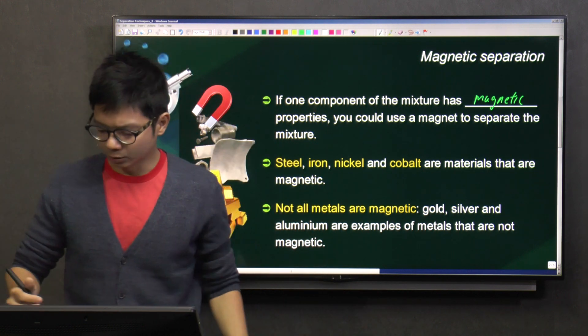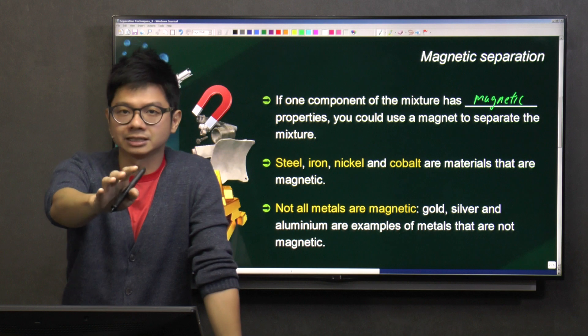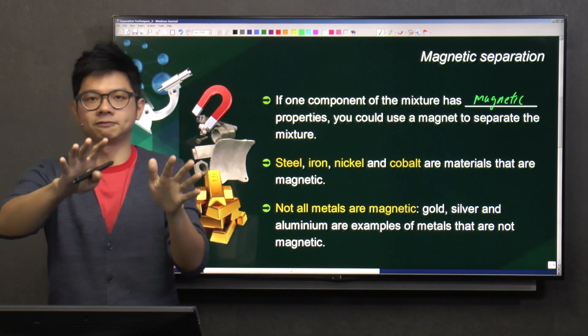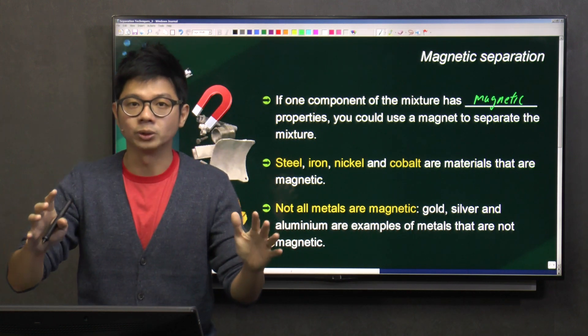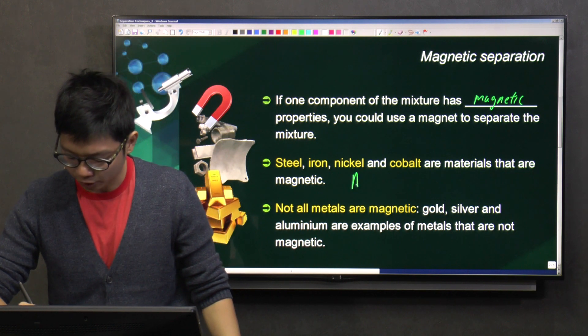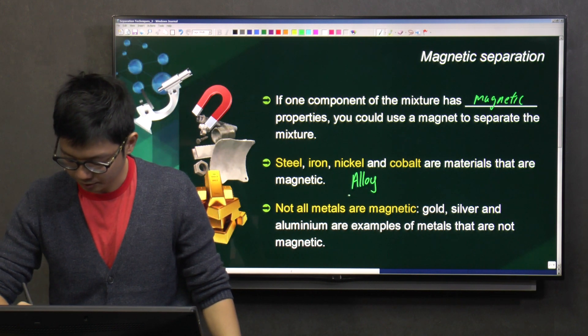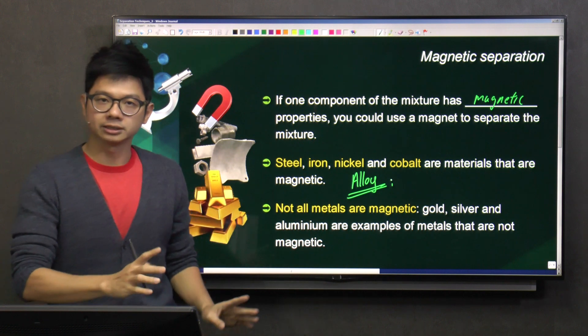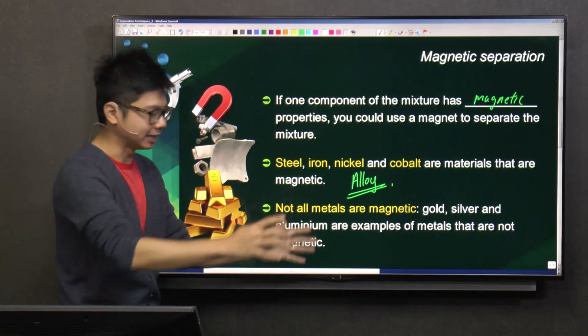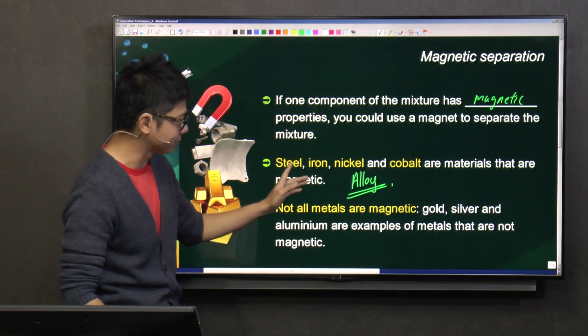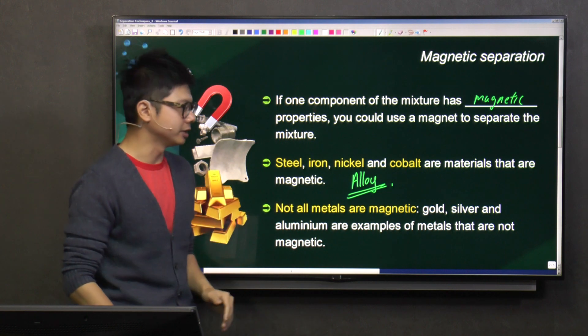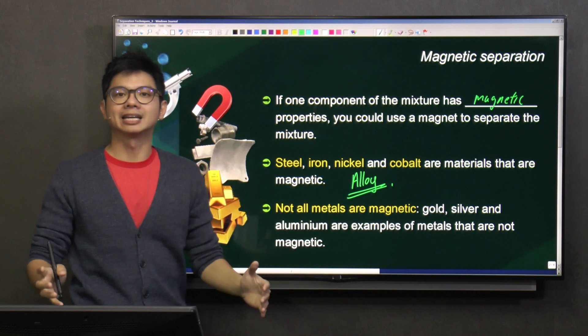And take note. Are these the four types of magnetic materials only? Remember in mixtures, we talk about alloy. So any alloys, which is a mixture of metals, as long as it contains any of the four magnetic materials, the alloy can be magnetic as well.